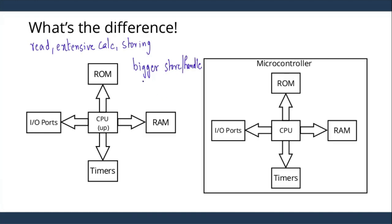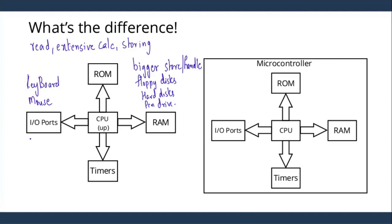When talking about ROM and RAM, it is basically floppy disks, hard disks, pen drives — these are some of the data storage devices used with respect to a CPU for storing or handling data. While data needs to be inputted, we use something like a keyboard or mouse, and for outputting we use our screens — that is our monitor or maybe a projector. As you can see, the data being handled by a CPU is comparatively bigger or larger.